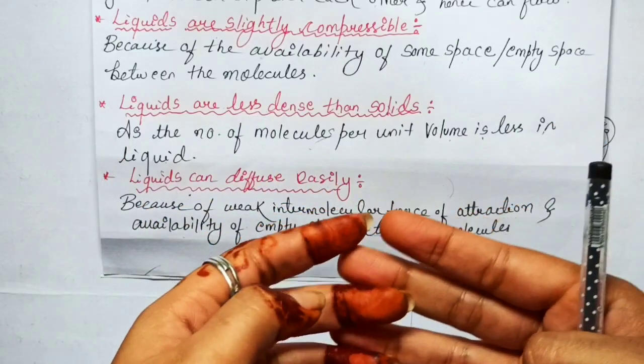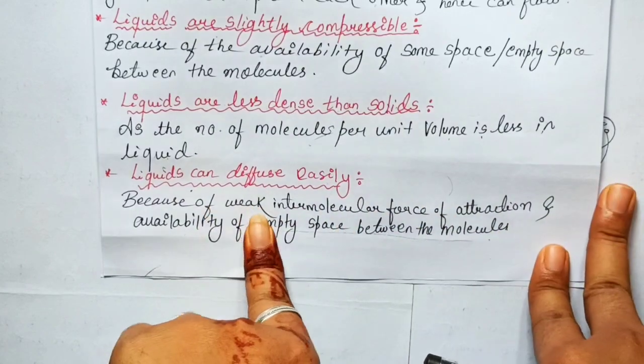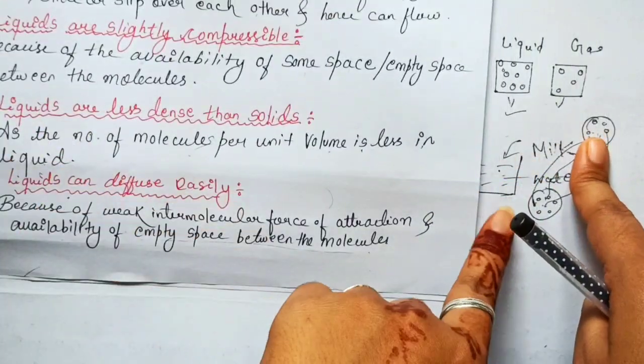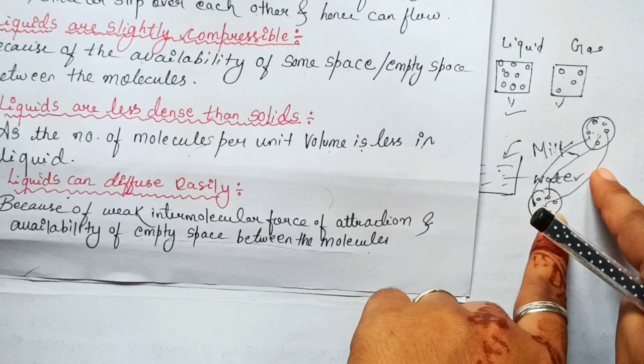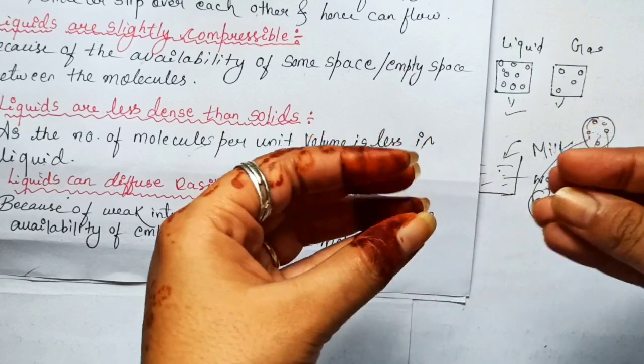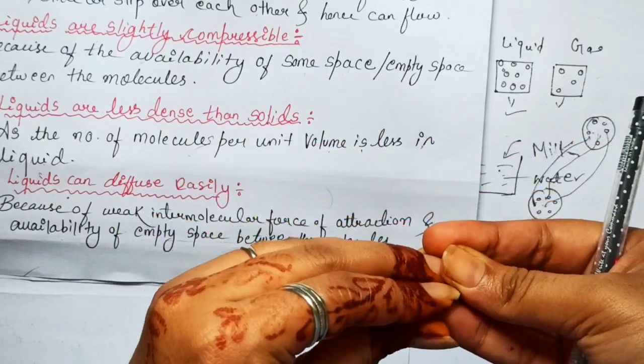We can also add one more point. Another reason is that the intermolecular force of attraction is very low, so the force doesn't keep the molecules so strongly — this also allows diffusion.